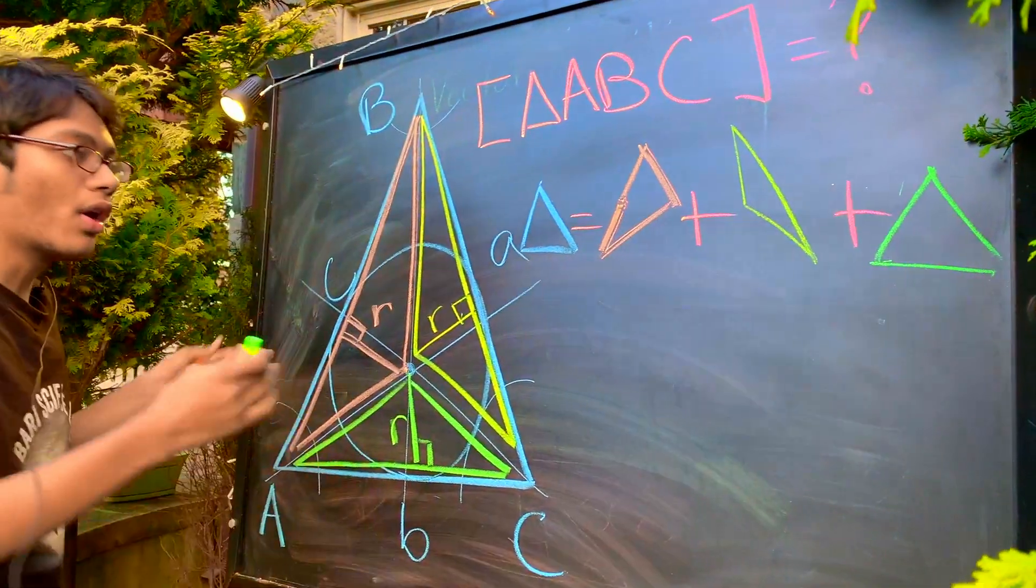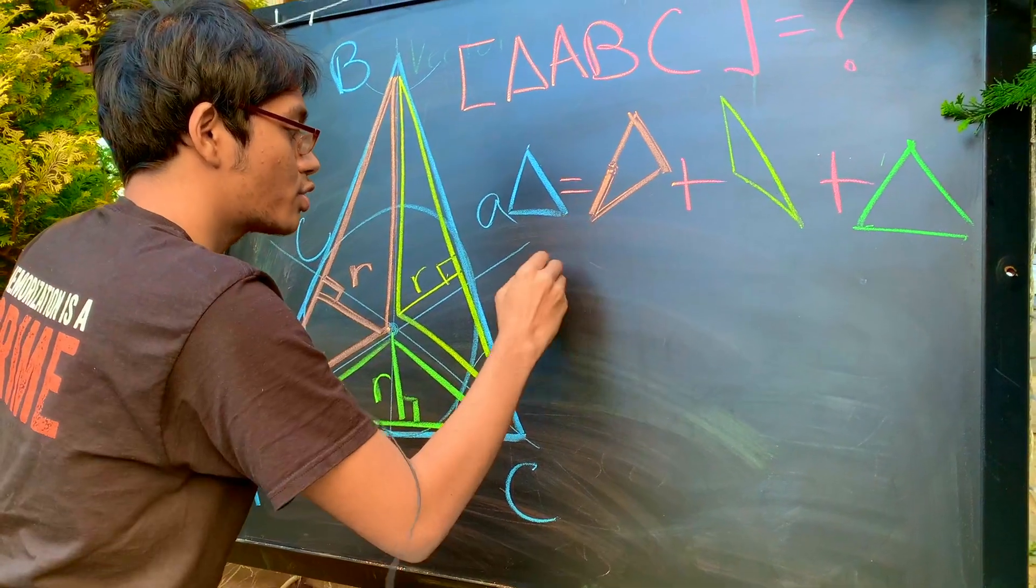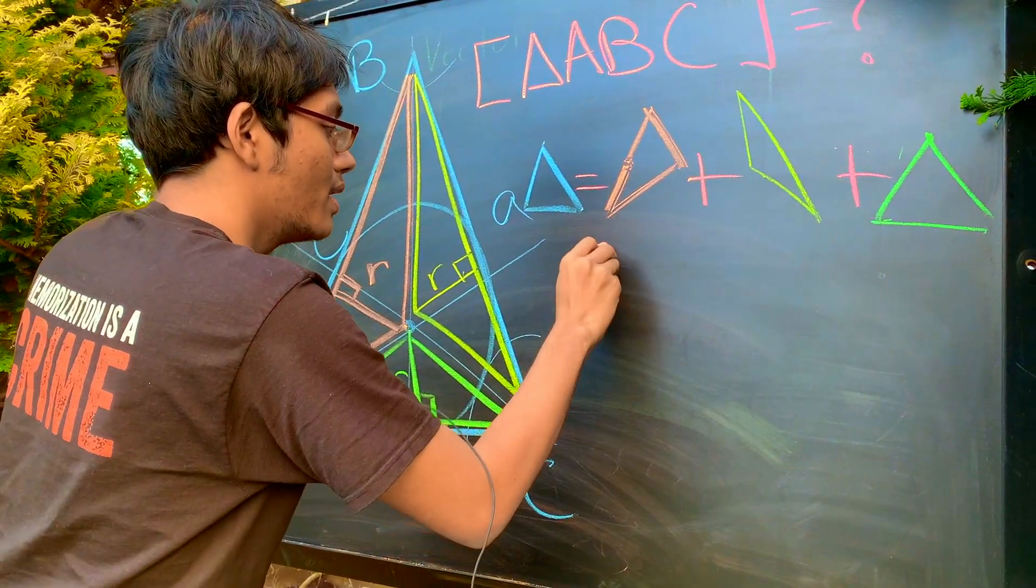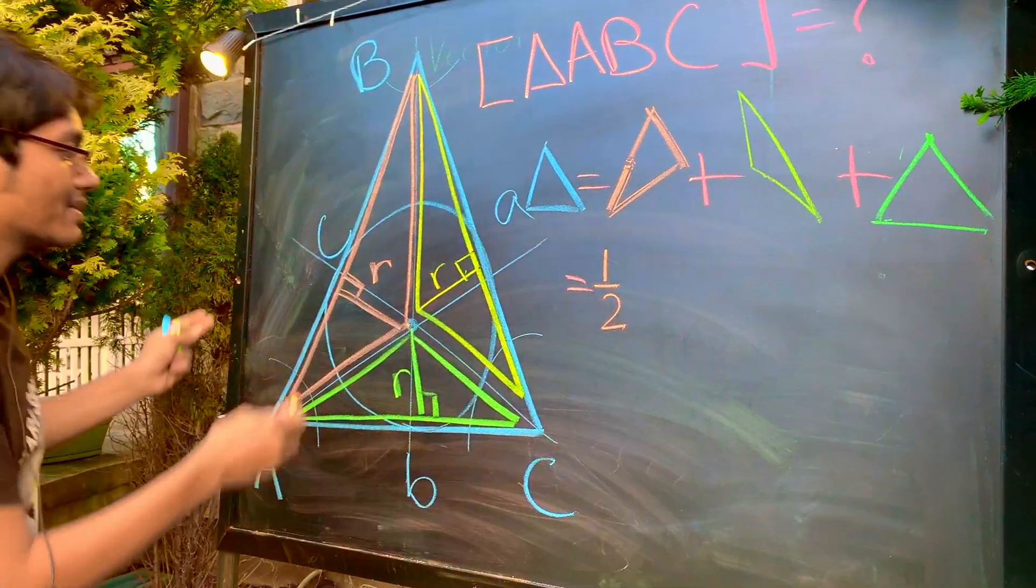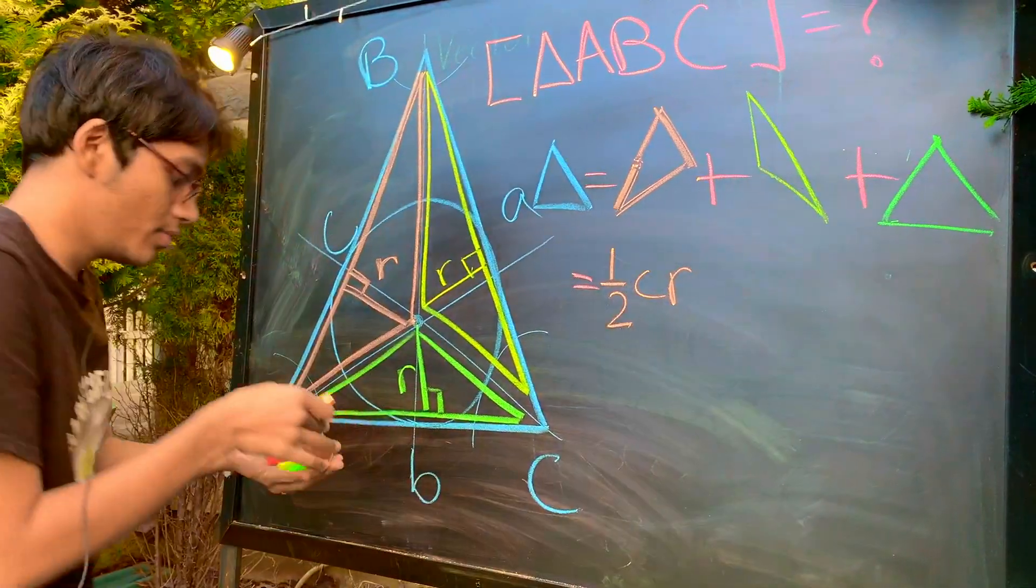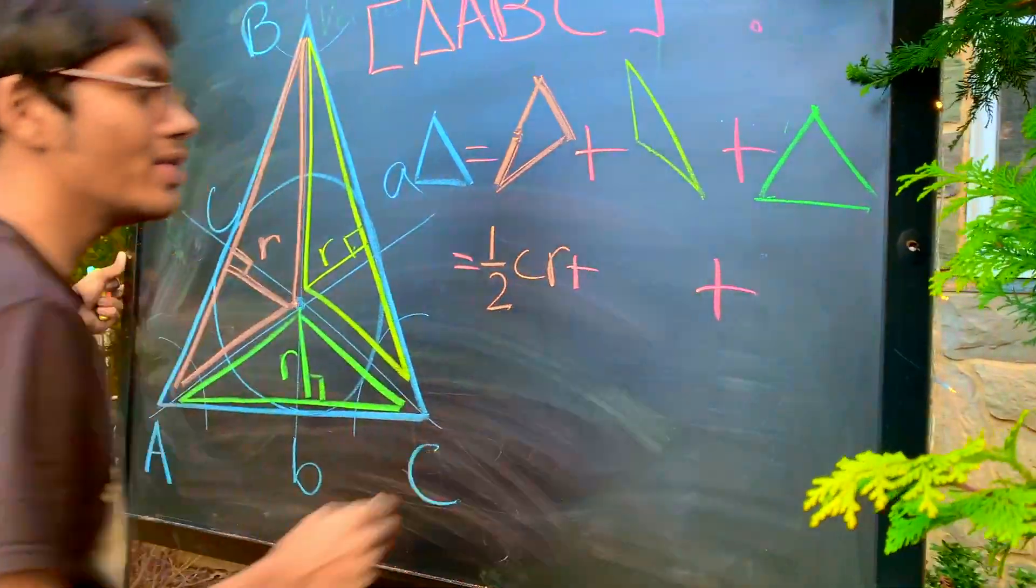And now, all we have to do is substitute. Okay, so what is the area of my orange triangle? Well, remember, area is just half base times height. So, well, what's half of my base? My base is C, right? And what's my height? My height is R. Okay, not too bad. Let's keep on going with the two other areas we have.